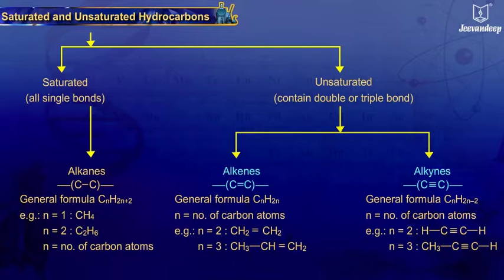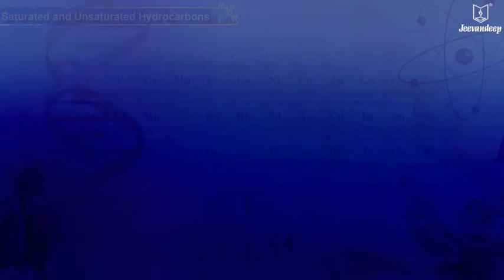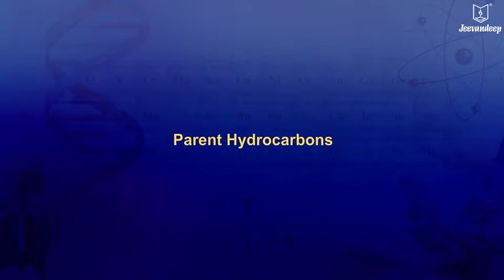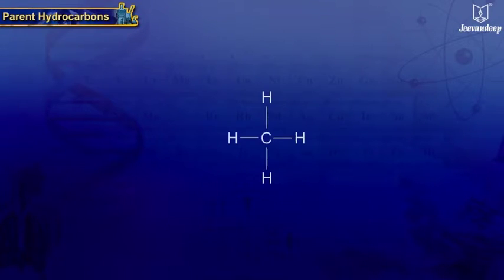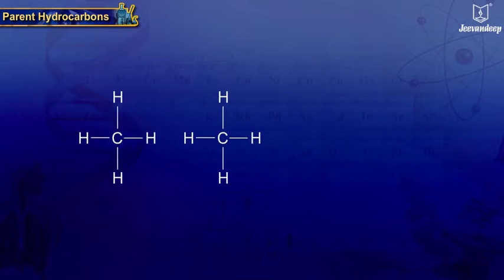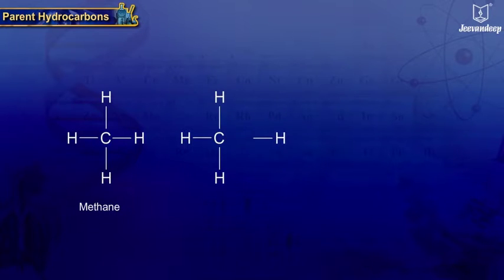They have less hydrogen content than saturated ones. Parent hydrocarbons: Methane (CH4) is a saturated hydrocarbon and an alkane. If we increase the number of carbon atoms by one and the number of hydrogen atoms by two, we get